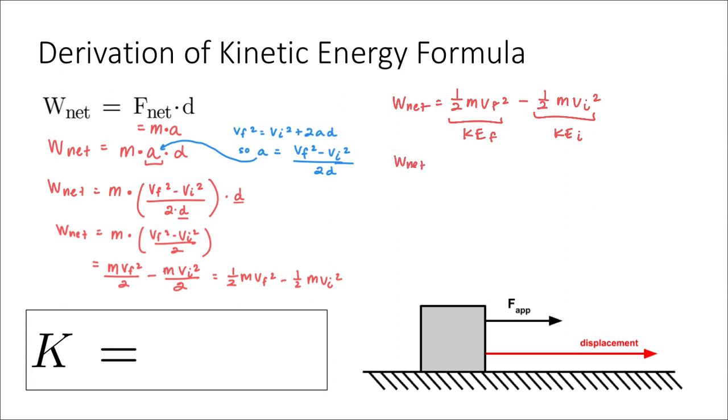So some textbooks will write this as the net work on any object is just equal to the change in kinetic energy. You can see that there, kef minus kei is just delta ke. This is known as the work energy theorem.